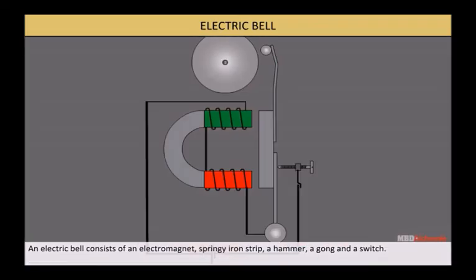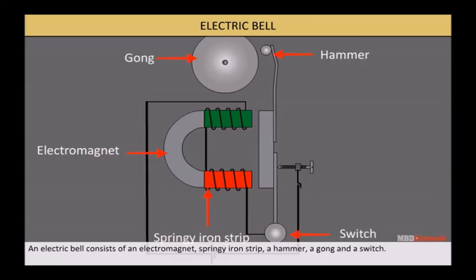An electric bell consists of an electromagnet, springy iron strip, a hammer, a gong, and a switch.